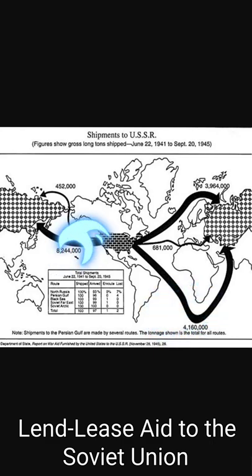Along the Persian route, some 4 million 160,000 tons of goods were transported to the Soviet Union — some 27 percent of the total. Lastly, the Pacific route involved crossing the Pacific Ocean into Soviet Pacific ports. The route was adversely affected by the onset of war between the U.S. and Japan, and after December 1941 only Soviet ships could be used and only non-military goods could be transported. Japan never tried to disrupt shipping along this route, as Japan did not want war with the Soviet Union. Some 8 million 244,000 tons of goods went along this route — 50 percent of Lend-Lease aid to the Soviet Union.